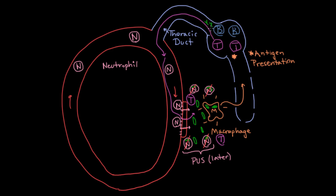B cells don't really need to go out into the tissue, because what B cells do is release antibodies. Those antibodies can float around the body themselves — some in the blood, and some will get out to the tissues where they need to do their work. So B cells can mostly stay in the lymph node, pumping out antibodies that go travel and join the fight themselves.